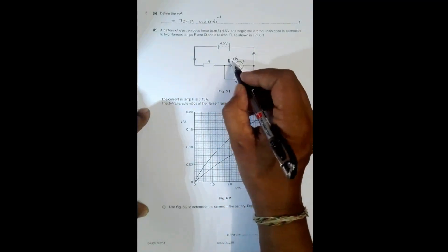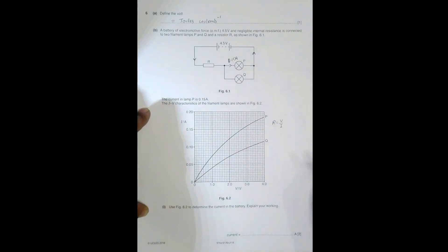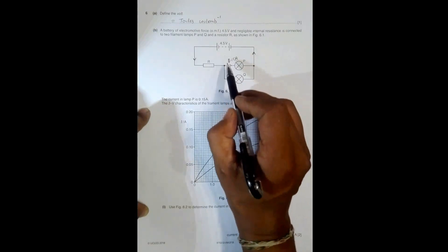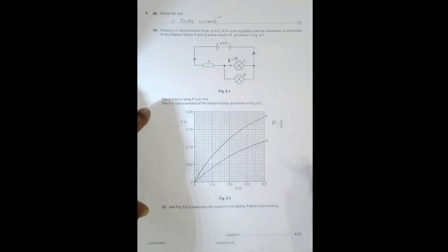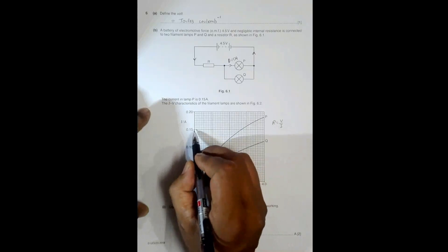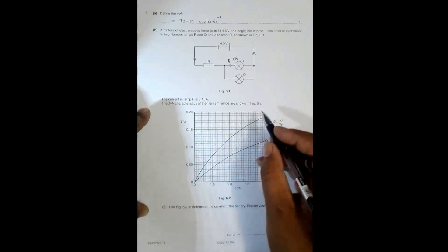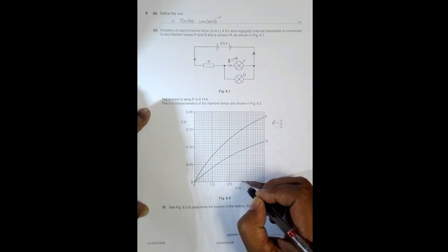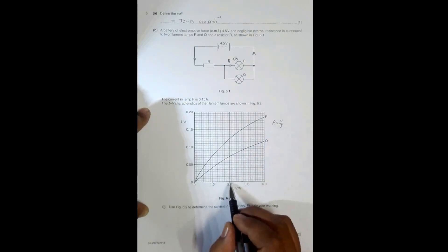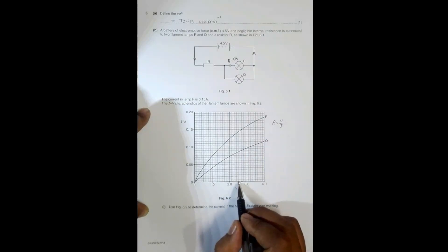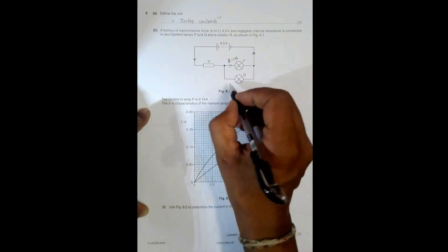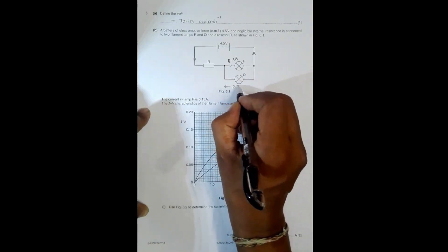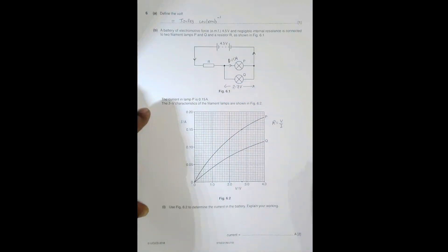We need to find the current from the battery. Since the current through lamp P is 0.15 A, we use the IV graph to find the PD across the parallel lamps. For lamp P, a current of 0.15 A corresponds to a potential difference of 2.7 V — so V2 equals 2.7 V.